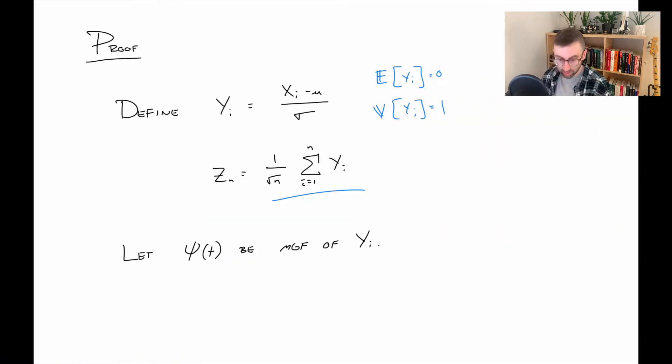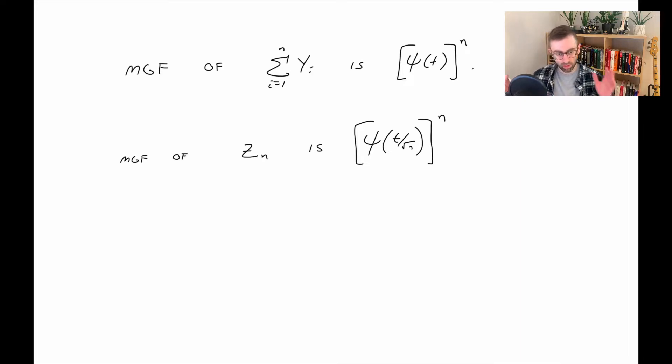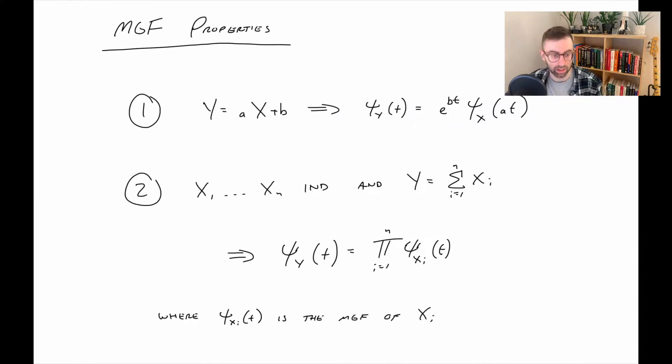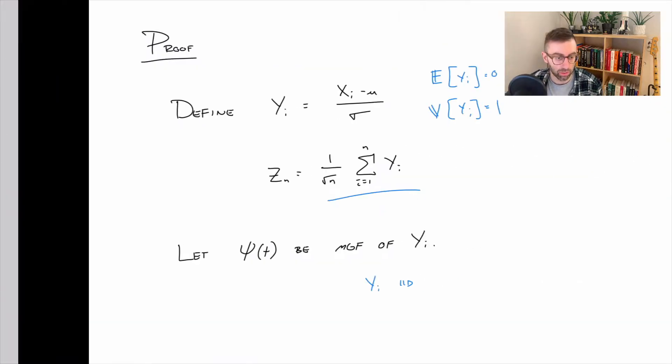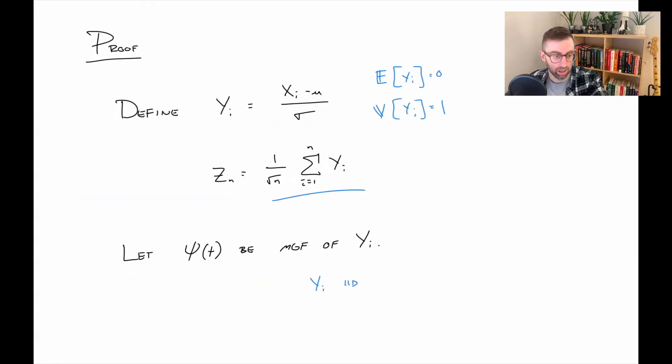We're going to say this quantity here is the moment generating function of yi, and note that the yi are also iid because the xi were iid, and we formed the same transformation to all of them. So the moment generating function of the sum of the yi's is, because they're iid, the product of each individual moment generating function. In other words, it's moment generating function times moment generating function times moment generating function, all the same, so it's just that moment generating function raised to the nth power. We're applying property two here to this sum of yi.